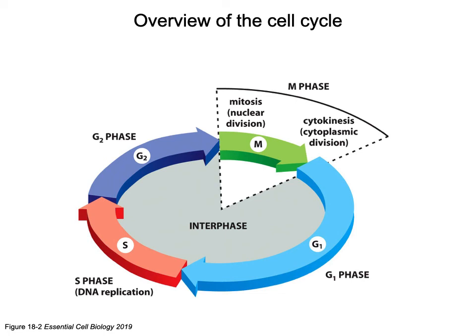A cell for most of its life is going to be in interphase — this is where the cell is actually performing its function. For most cells, their function is not achieved during mitosis or M phase; it would be during these other three phases where the cell spends the majority of its time, undergoing biochemical processes, replicating material, and growing. After G2 phase, because it has replicated its genome, it would enter M phase: first mitosis (nuclear division), then cytokinesis (cytoplasm separation).